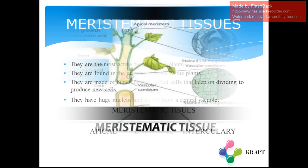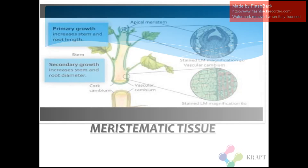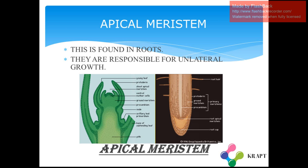Now let us learn about apical meristem. Apical meristem is found in roots and shoot tips. They are responsible for unilateral growth, which is the vertical growth of the plants. The first diagram shows the unilateral growth at the upper part of the plant, and the second diagram shows the roots below.